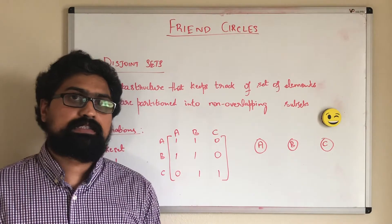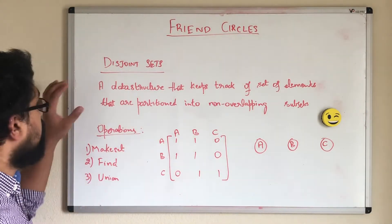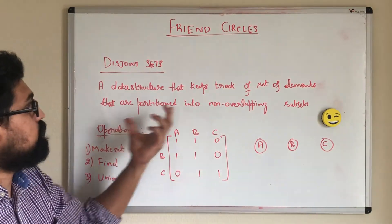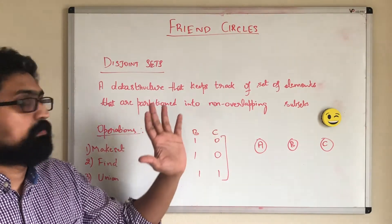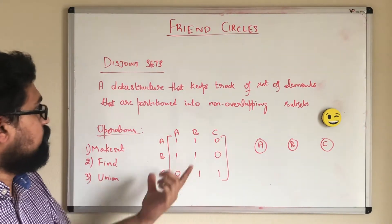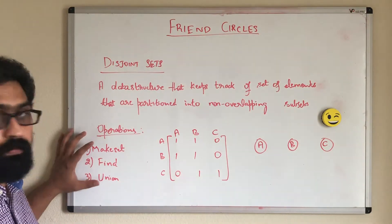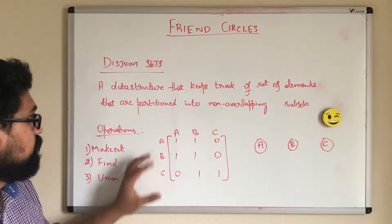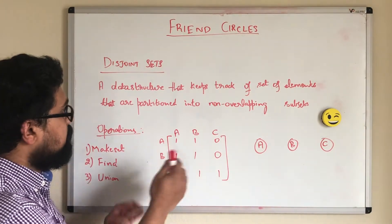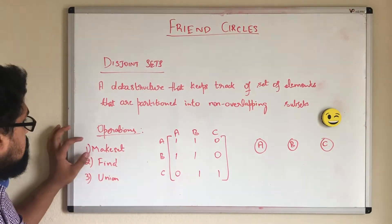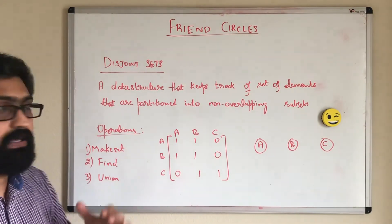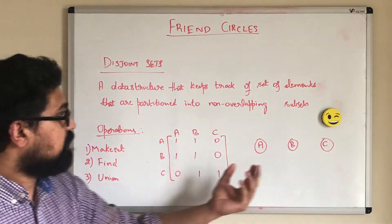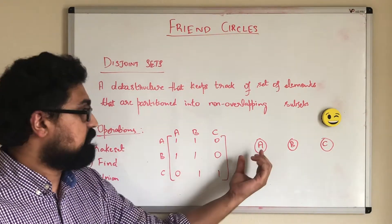So what is a disjoint set? As per the definition from Wikipedia, a disjoint set is a data structure that keeps track of a set of elements that are partitioned into non-overlapping subsets. Let's take an example and understand the operations of a disjoint set, and then this definition will be clear. Here we have three people A, B and C. First let's call the make set operation — what does a make set operation do? When make set is called on person A, it will create a single set consisting of person A.